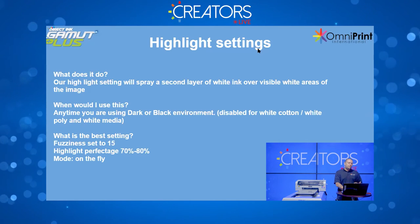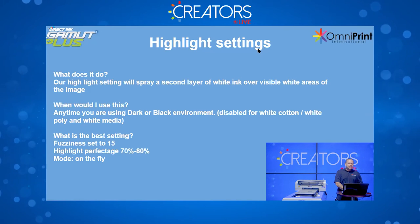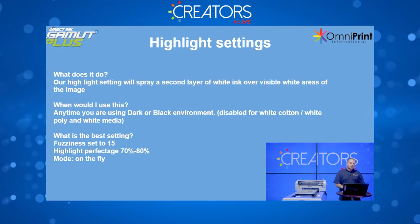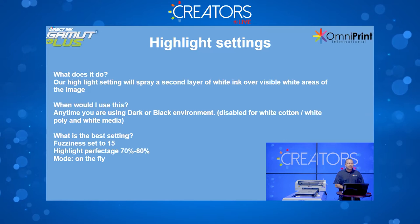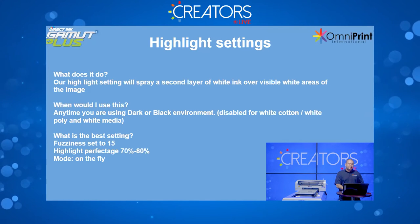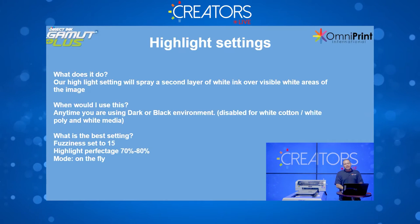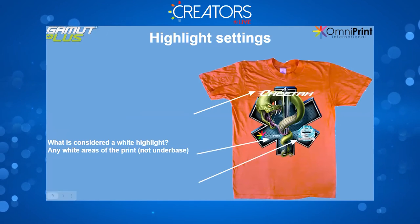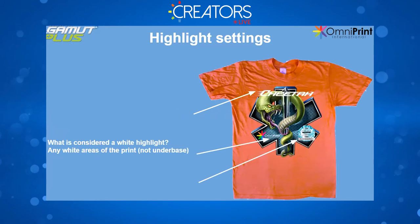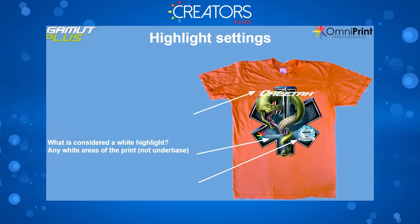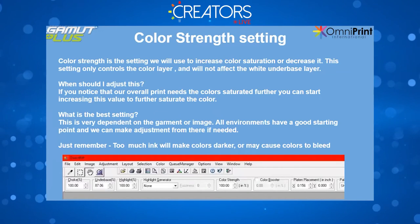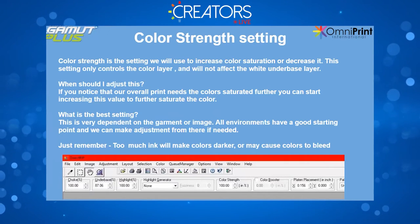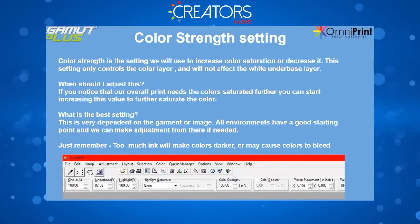On the fly is the default and that's where you want to keep it. If you ever want to turn it off, you'll see 'none.' I keep fuzziness at 15 to get a nice coverage on those white areas. So 80%, on the fly, fuzziness at 15 — I think you will notice a pretty significant kick in those white highlights. Sometimes you may not even have a white highlight if your image has no visible white areas.